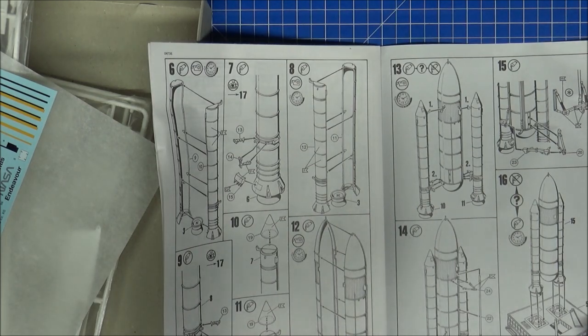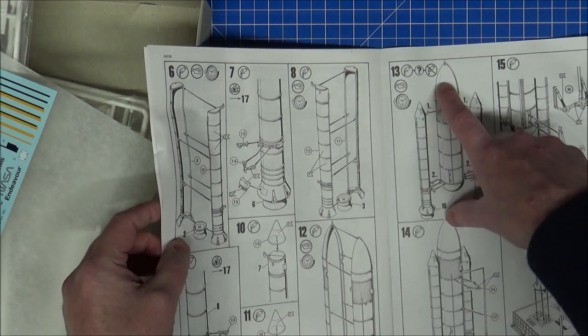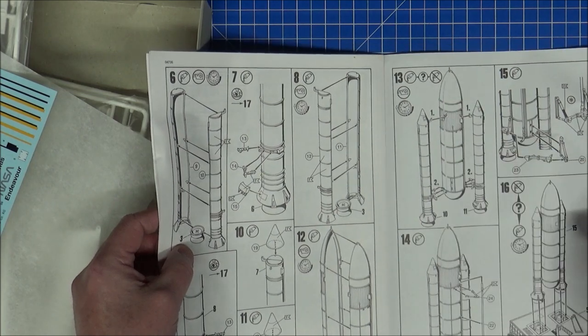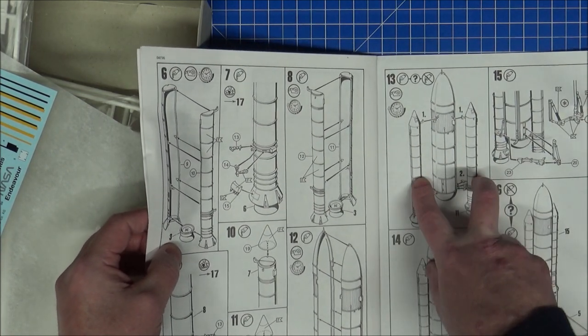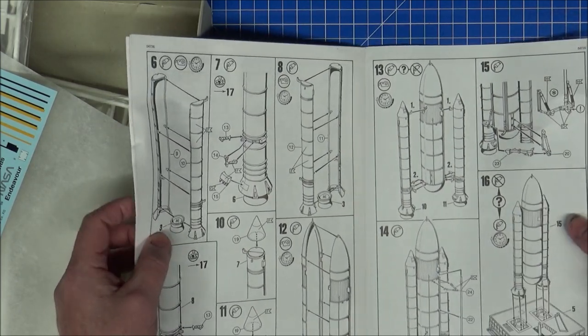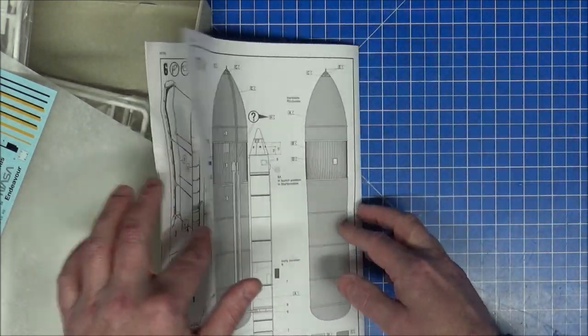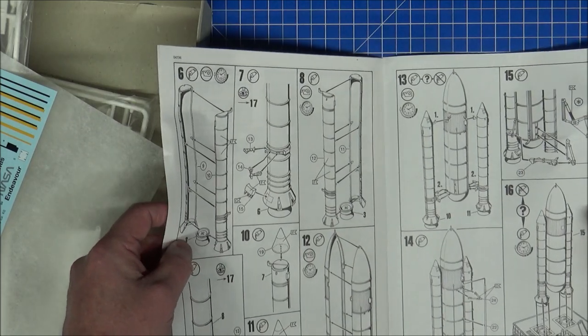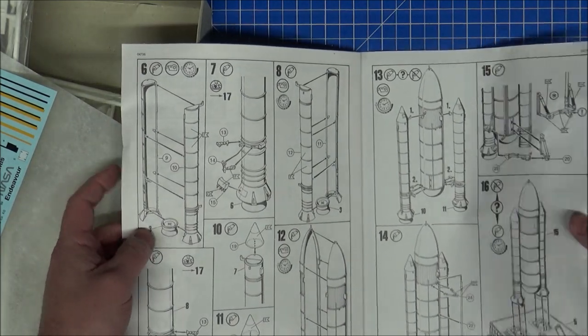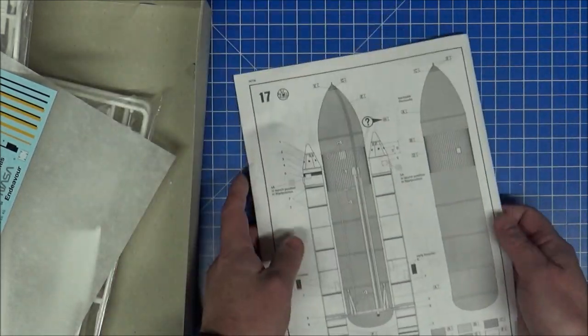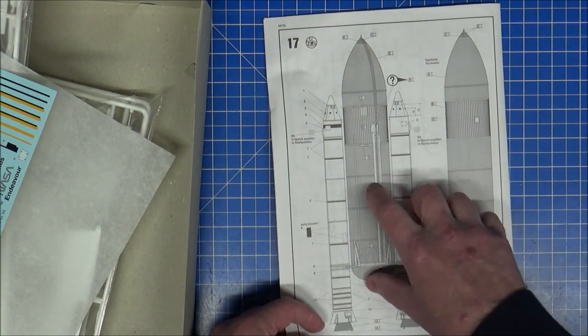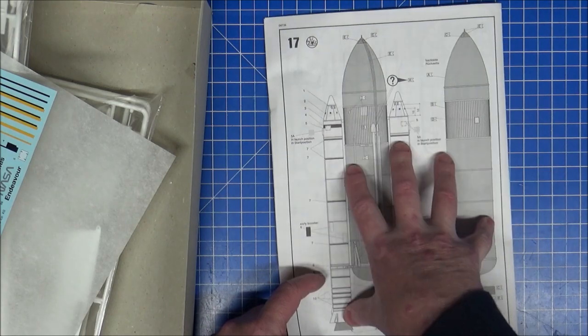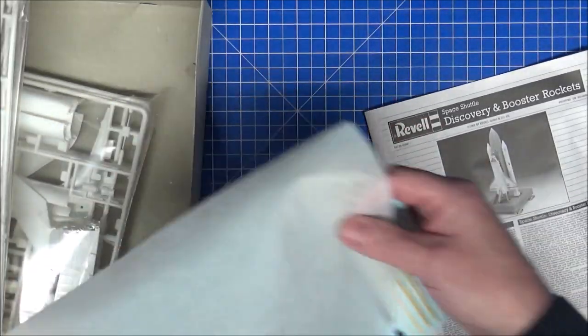They did this with the first one or two shuttle launchers where they painted the fuel tank white to make everything look white, and then they decided stuff it, put the undercoat on as a rusty color and left it. There's no point, to be honest. This thing's going to burn up in atmosphere. These came back and were attempted to be reused.